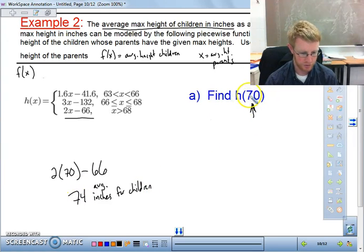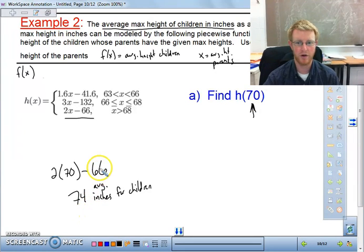If the average height for the parents is 70, then the average height for the children could be 74. Okay? So that's one example.